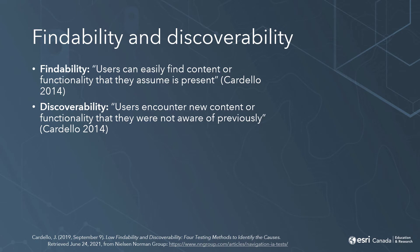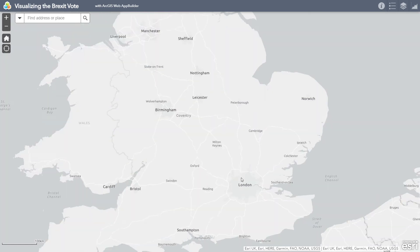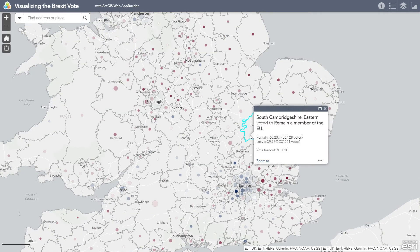Another thing to think about when developing mapping apps is the findability and discoverability of features in the app, since mapping apps can contain a lot of functionality. Findability refers to how easy it is for users to find the features they're specifically looking for, and discoverability refers to how easy it is to find other helpful features they didn't necessarily know about. Often we think an app becomes easier to use if we make the visual design simpler and more minimalist — and this is true to an extent — but making the design too minimalist can make it more difficult for users to find the features they need. As a basic example, if your users will need to interpret the symbology of your web map, like this map of the 2016 Brexit referendum, you'll want to make sure they can access the map legend easily.